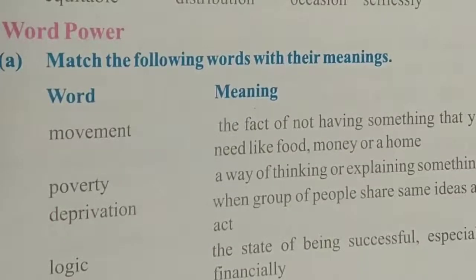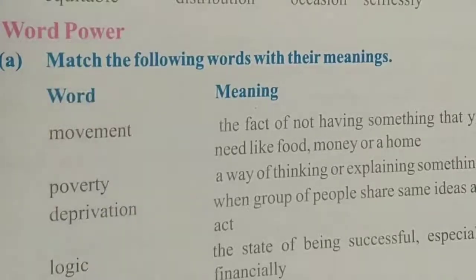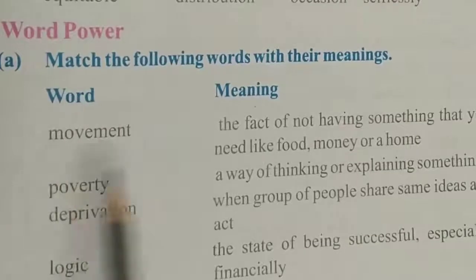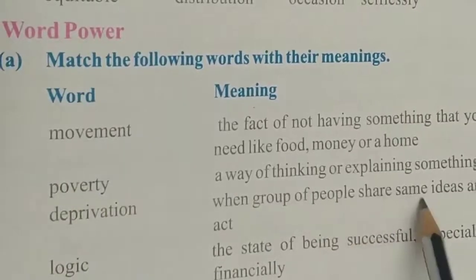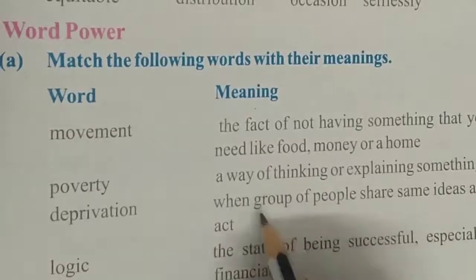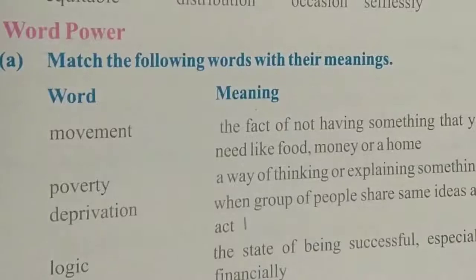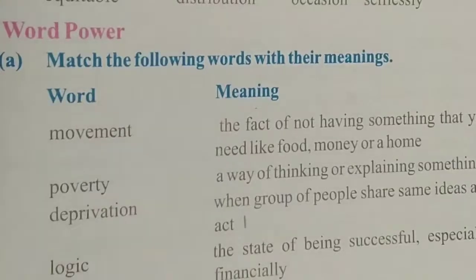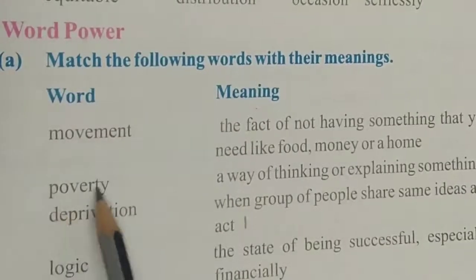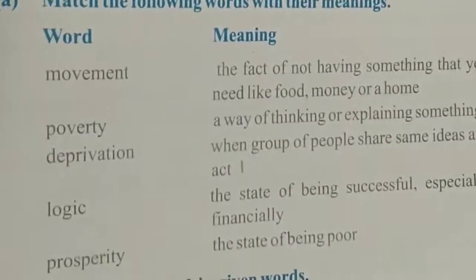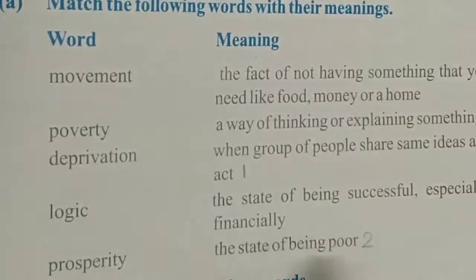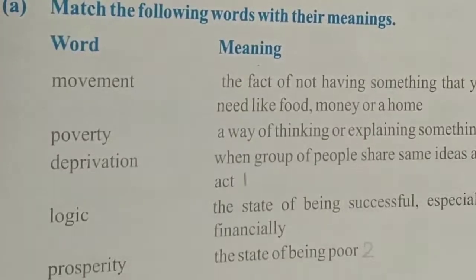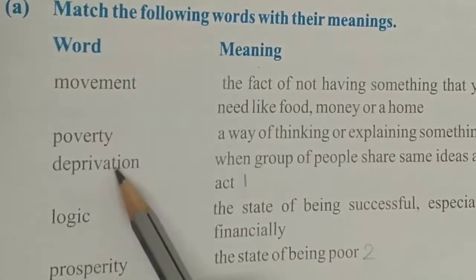Now go to Word Power. Section A is 'Match the Following Words with Their Meanings.' The first word is movement — movement means when a group of people share the same ideas and act together. Jab logo ka ek poora group ek hi jaise idea aur ek hi jaise act ko share karta hai, usay hum movement kehte hain. Second is poverty — poverty means the state of being poor, gareebi ki ek sthiti.